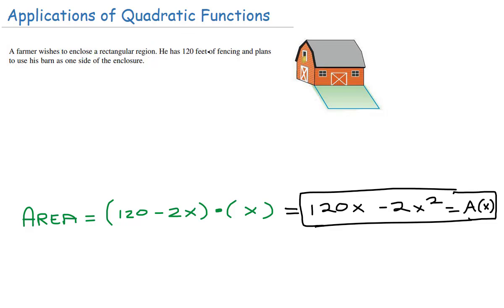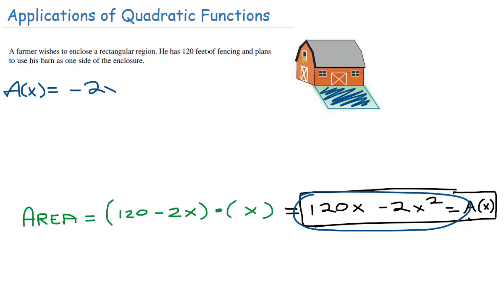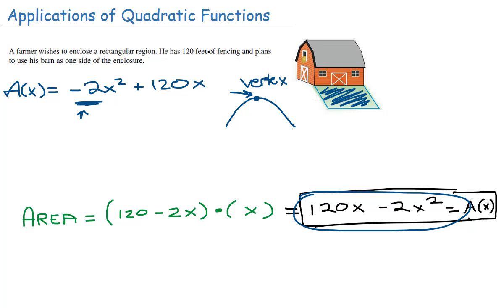Now let's answer the question: what's the largest area this farmer can enclose with their fencing? Since this is a quadratic function, we're looking for the vertex. Rewriting the function with the quadratic term first: negative 2x squared plus 120x. The leading coefficient is negative, so if we graph this as a parabola it opens downward, meaning there is a maximum at the vertex. That vertex will tell us the maximum area.